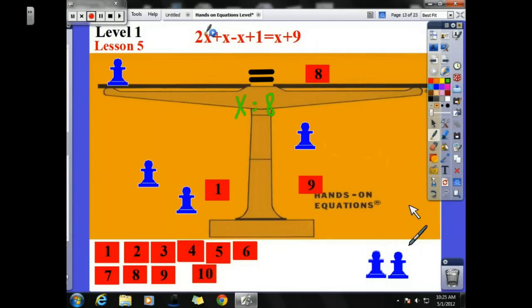And now let's go ahead and check our answers. 2 times 8 is 16. 16 plus 8 is 24. 24 minus 8 is 16. And 16 plus 1 is 17. And over here on my right side, I have 8 plus 9. 8 plus 9 is 17. I say 17 checks 17. Well done.